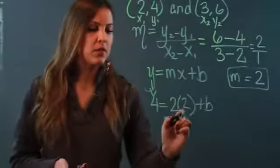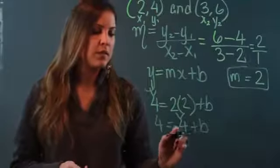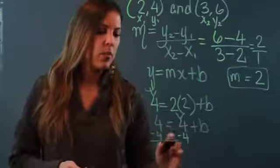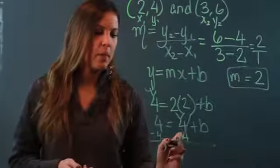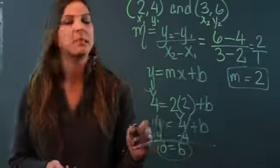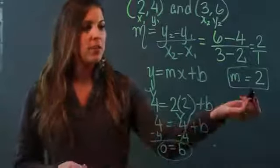So 2 times 2 is 4. I get 4 equals 4 plus b. I'm solving for b, and I'm going to do that by subtracting 4 on both sides. When I do that, I get 4 minus 4 is 0, equals, these cancel out, b. So I found my y-intercept to be 0.